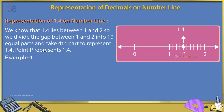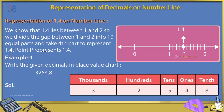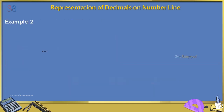Example 1: Write the given decimals in a place value chart. 3254.8. Solution — Thousands: 3, Hundreds: 2, Tens: 5, Ones: 4, Tenth: 8.